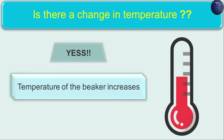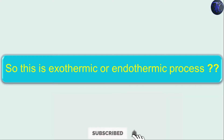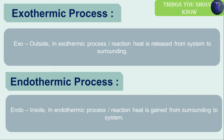Is this an exothermic or endothermic process? To answer this, you need to understand the terms. The word 'exo' itself means outside — in an exothermic process or reaction, heat is released from the system to the surroundings. So what is the system and what is the surrounding? Let's connect it with our activity.